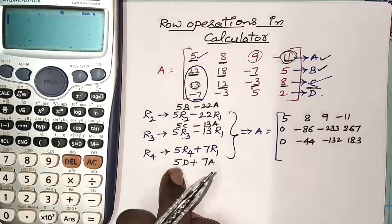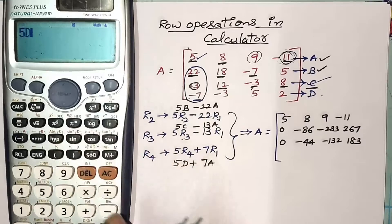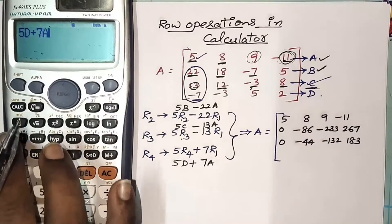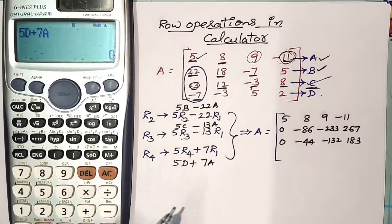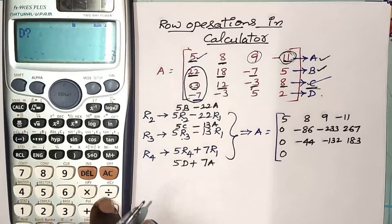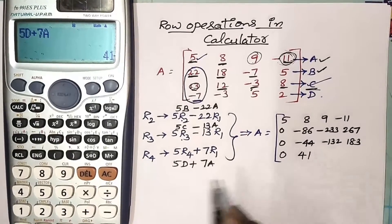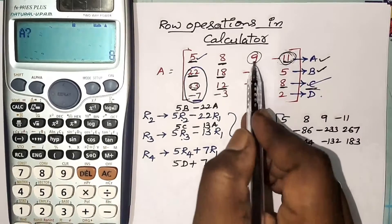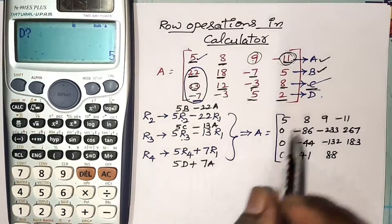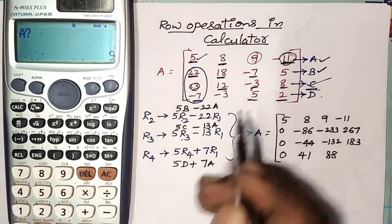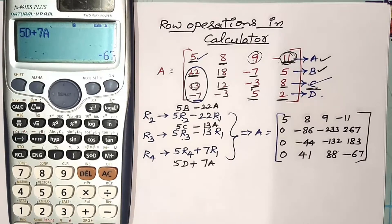Clear the screen and operate 5D plus 7A in the calculator. Press 5, Alpha D, plus 7, Alpha A, then the calculate button. D value is negative 7, A value is 5 — I got 0. Next, D value is minus 3 and A value is 8 — I got 41. Then D value is 5 and A value is 9 — I got 88. Last, D value is 2 and A value is minus 11 — I got minus 67. In this way we can easily do row operation calculations in our scientific calculator.